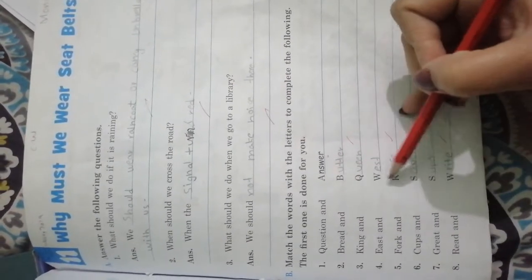Match the words with the letters to complete the following. The first one is done for you. Question and answer, bread and butter, king and queen, east and west. First word we have written, complete the spelling.